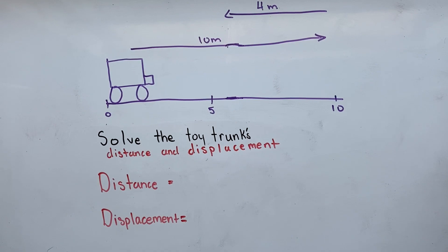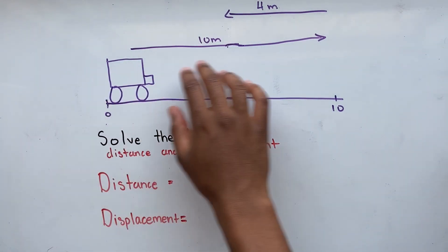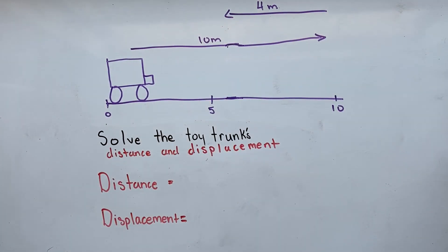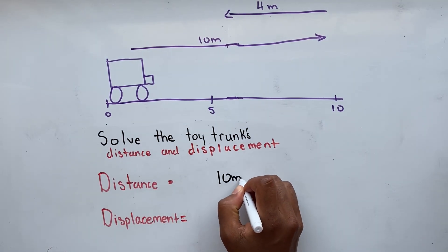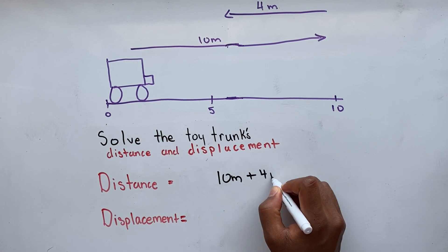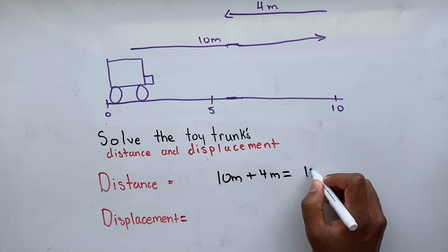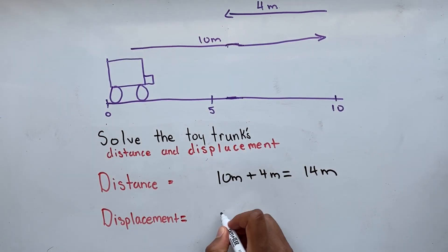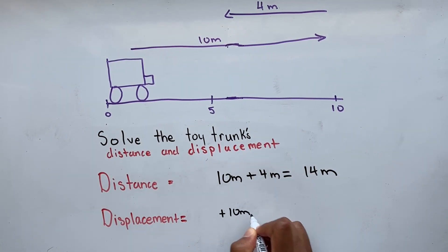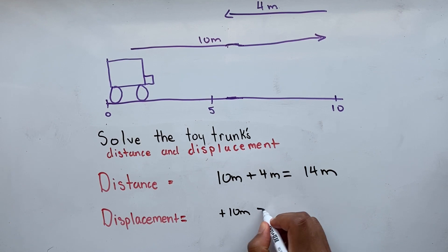Let's do one last example. Let's say our toy truck traveled 10 meters to the right, then 4 meters to the left, and we are asked to solve for its distance and displacement. When dealing with distance, we only take into consideration the magnitude. So our toy truck traveled 10 meters, then it traveled 4 more meters, giving a total of 14 meters. When dealing with displacement, we have to take into consideration the direction as well as the magnitude. So our toy truck traveled 10 meters to the right — that's positive 10 meters — then it traveled 4 meters to the left, that's negative 4 meters.